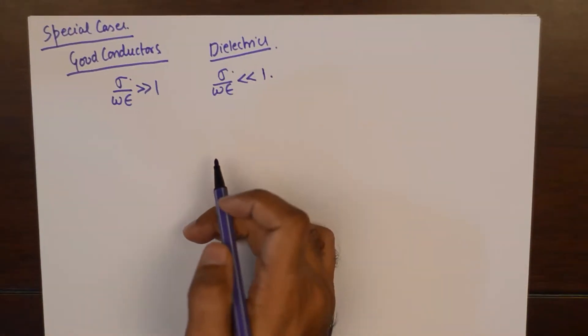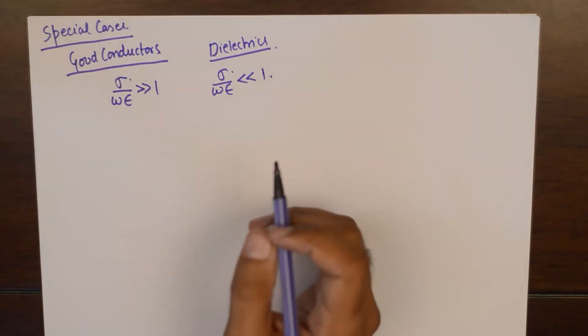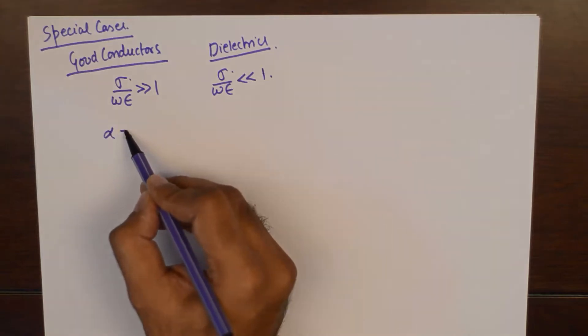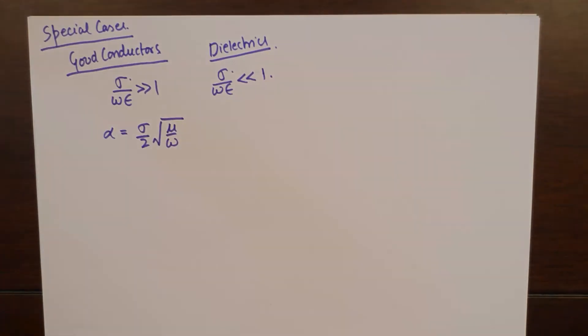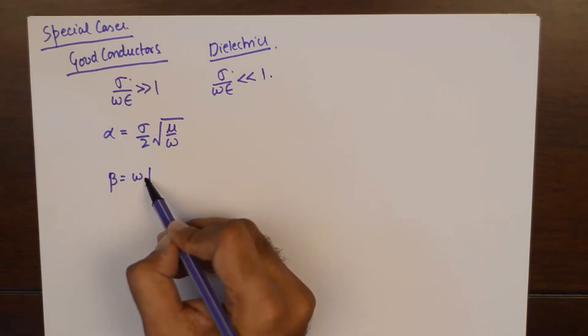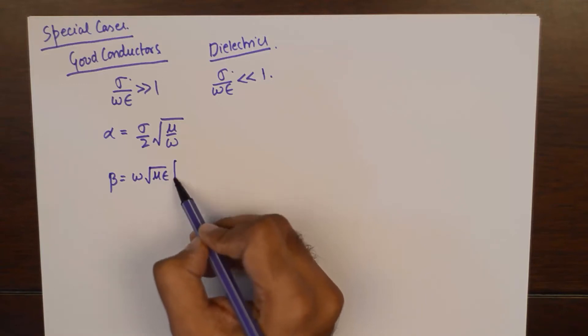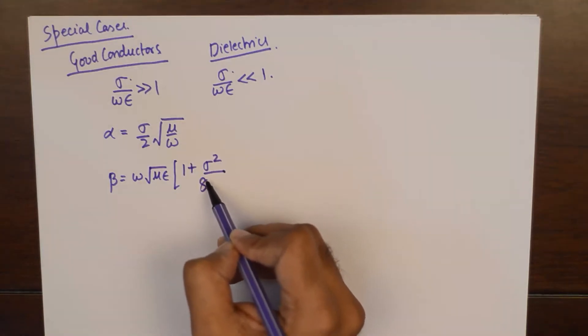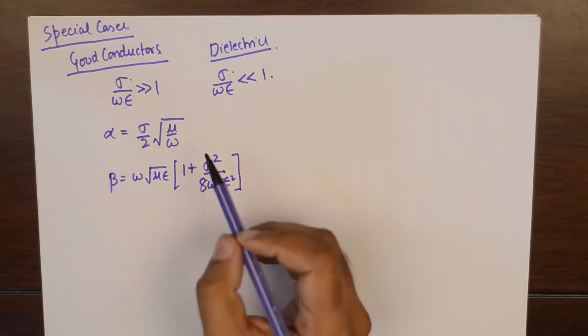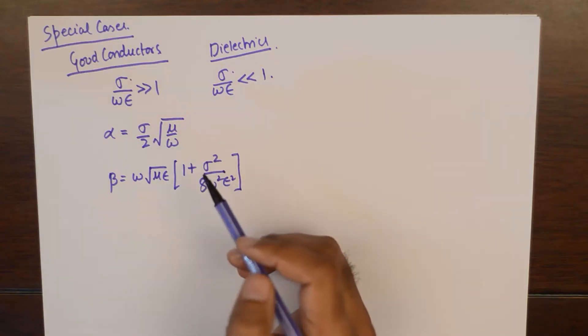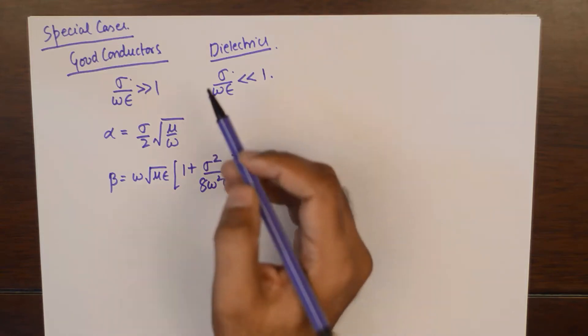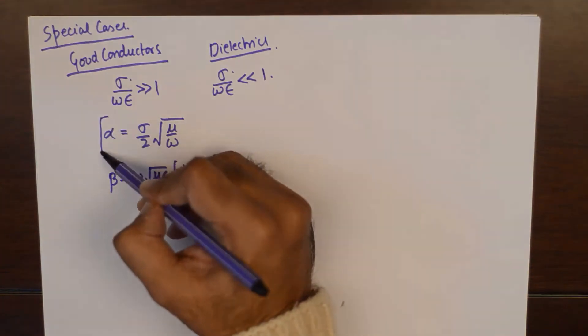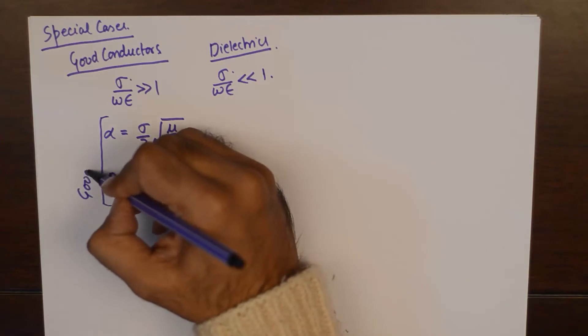The first approximation is that for good conductors, the value of sigma upon omega epsilon is going to be way too large as compared to 1. And for good dielectrics, the value of sigma upon omega epsilon can be substituted as way less than 1. Now, if you substitute these approximations in the main formulas for alpha and beta, then alpha reduces to a very simple expression and beta still remains a little bulkier as compared to alpha. But you can use these direct shortened formulas to solve numericals.